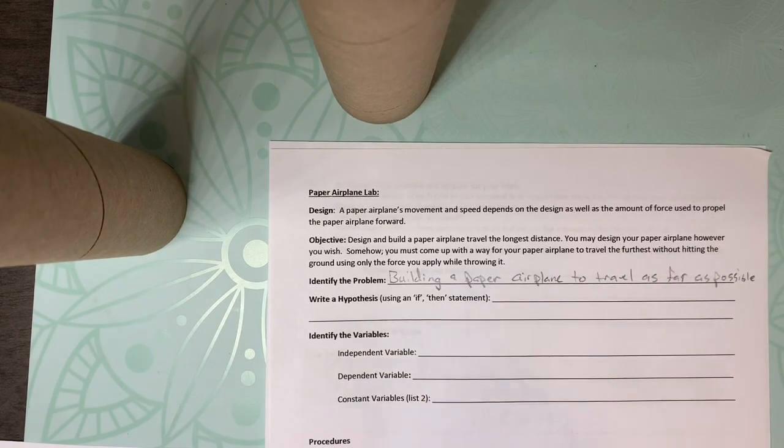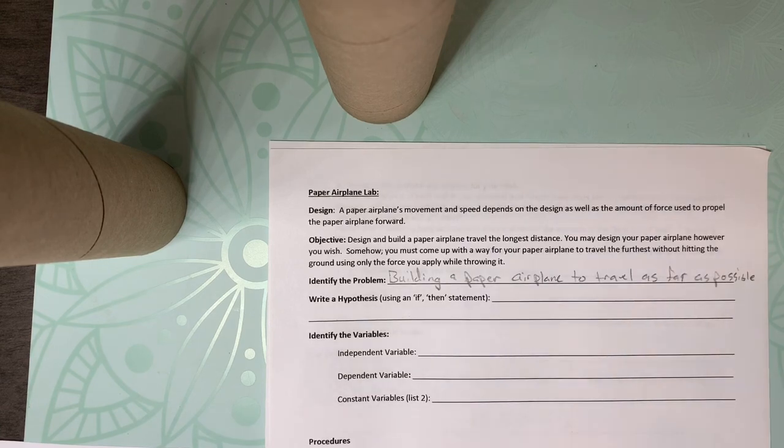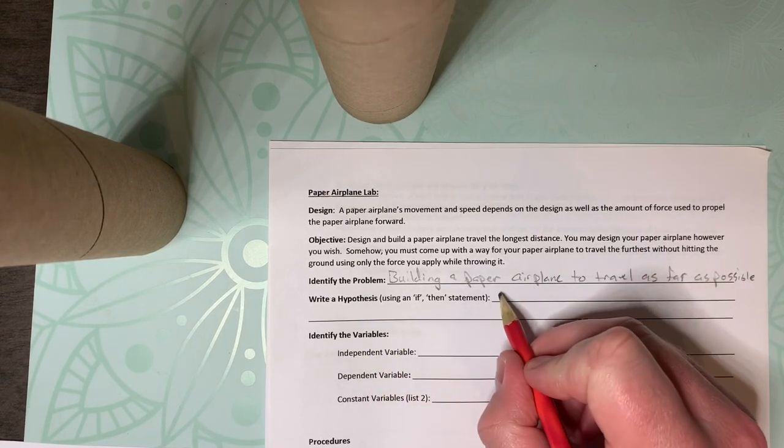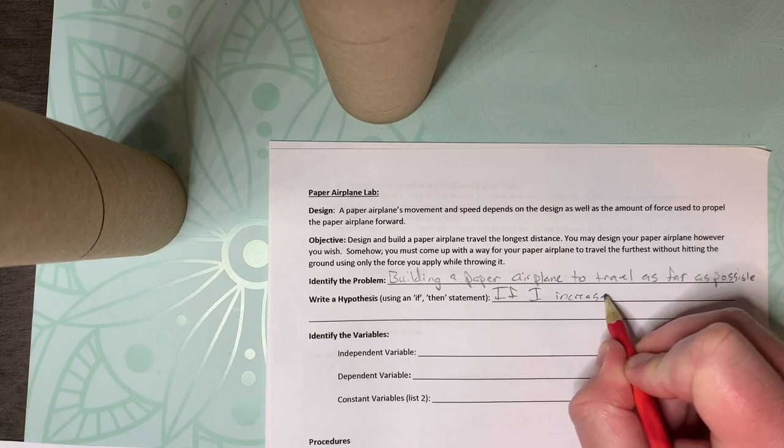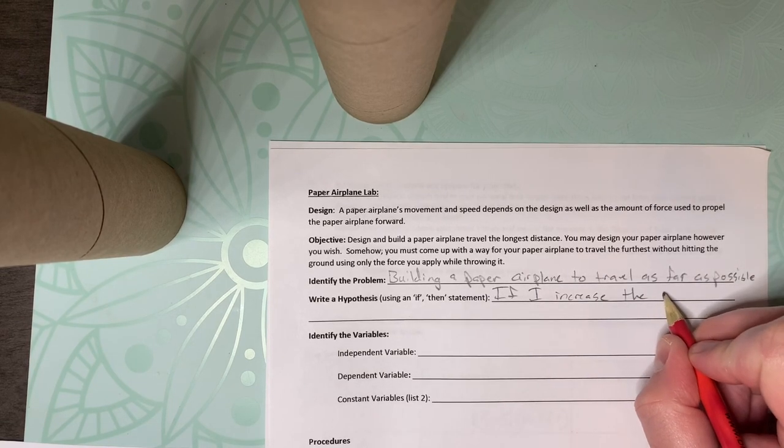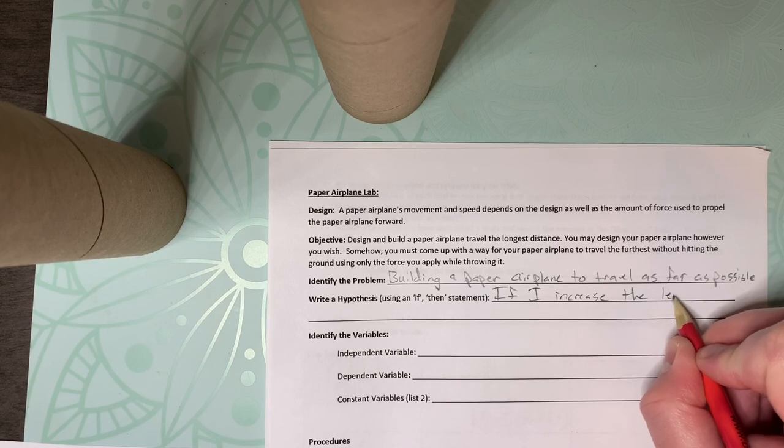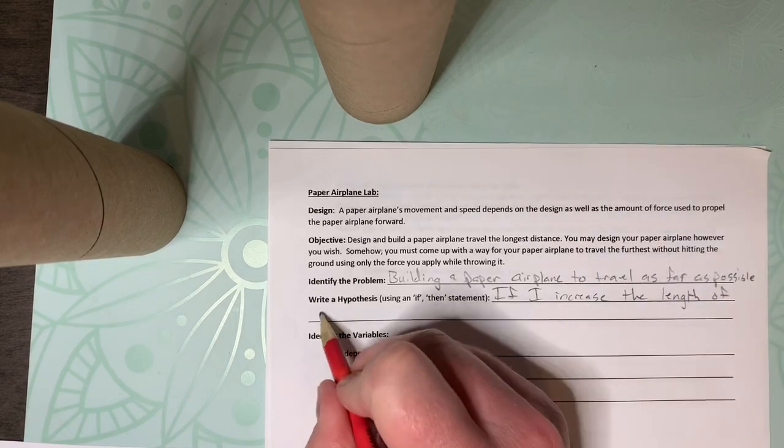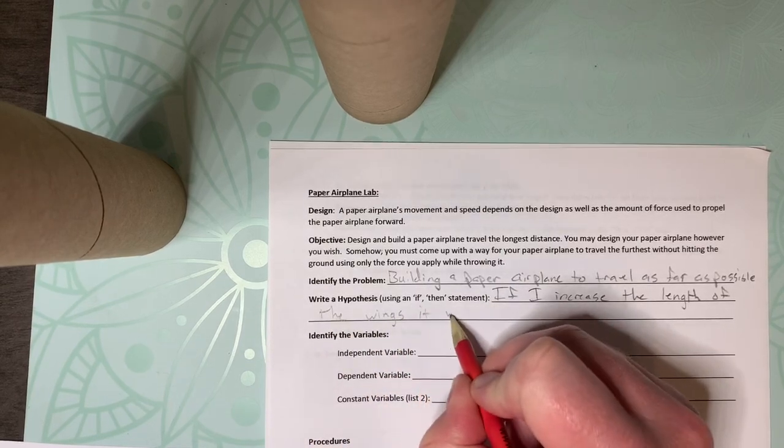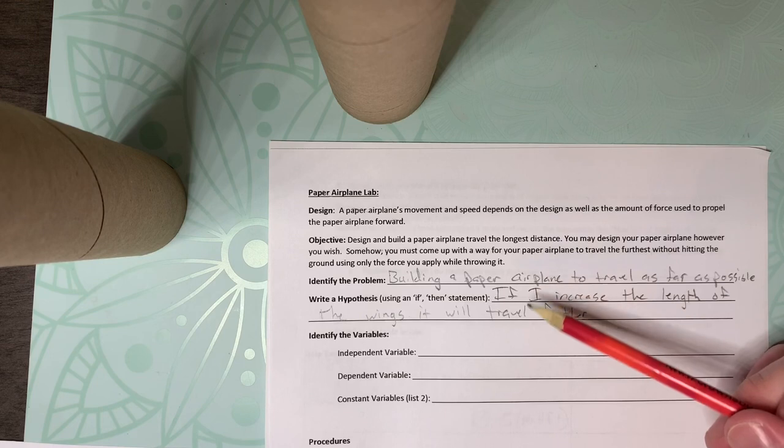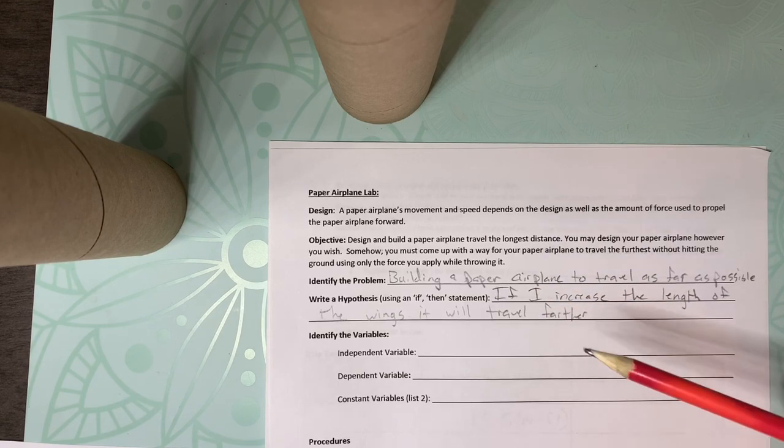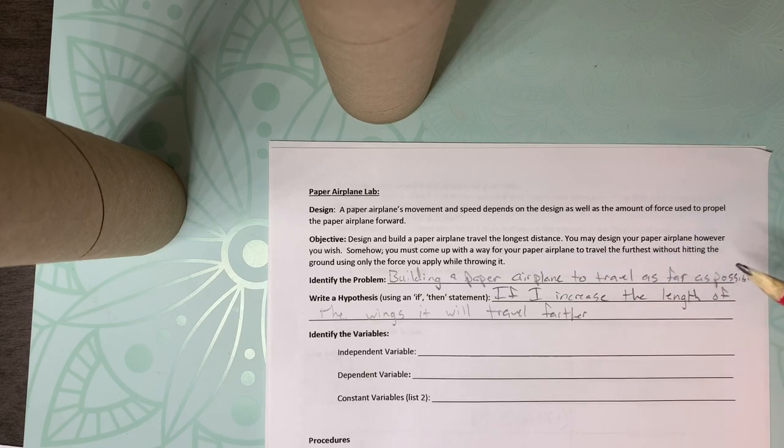Hypothesis. Remember, it has to be an if-then statement. So for example, if I add a rocket to it, then it will go far. So mine for this actual one will be if I increase the length of the wings, it will travel farther. And remember, that is the thing we're going to be testing. So this is something we can test. If I make the different length of wings, I can test that idea and see if it actually does travel farther.